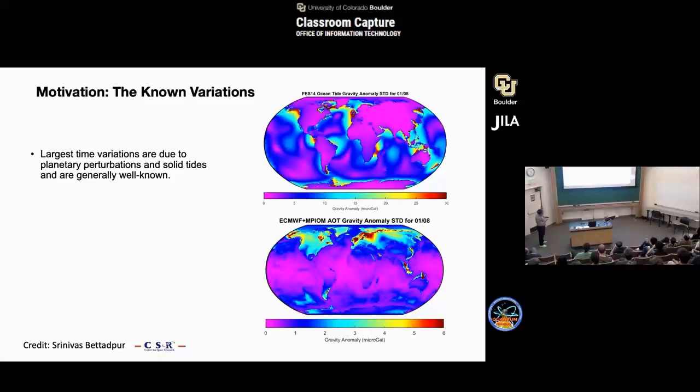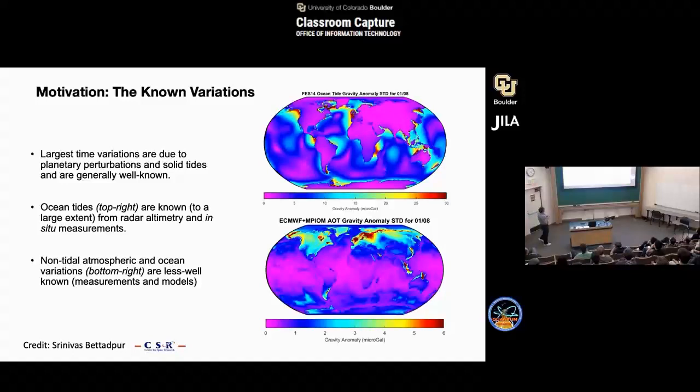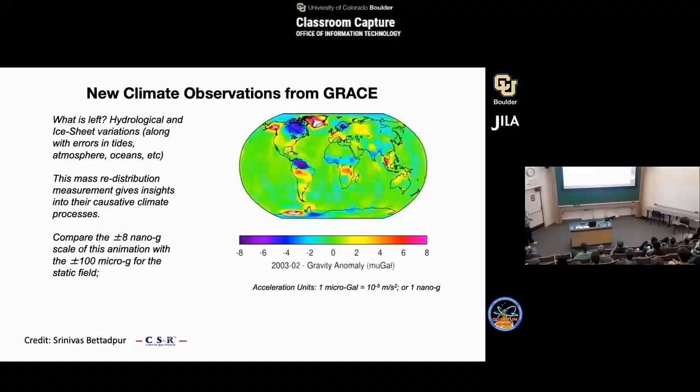You can use that to measure gravity gradients. These maps are made with these kinds of really wonderful classical measurement devices. But you can go beyond that and start to think about variations that occur in time. The largest time variations are due to planetary perturbations and solid tides. There are tides in the sea, but also tides in the Earth and land, and they can be measured. This gravity anomaly is in micro-gal, and this is definitely not an SI unit.